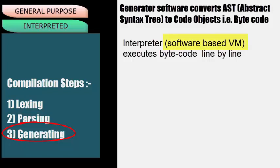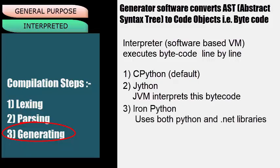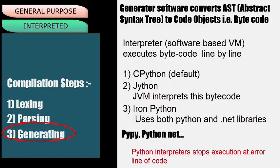The Python interpreter is a software-based virtual machine and can be written in any language. First is CPython, written in C, which comes default with a Python installation — it compiles source code to bytecode and then interprets it. Next is Jython, which compiles Python code to Java bytecode and then the JVM executes it. Next is IronPython, which uses both Python code and .NET libraries and exposes Python code to other languages. Some other implementations are PyPy, Pythonnet, and many more. Python is still known as an interpreted language because of the way the programmer interacts with it — if a Python program has an error, it shows the error at that line of code and stops execution.